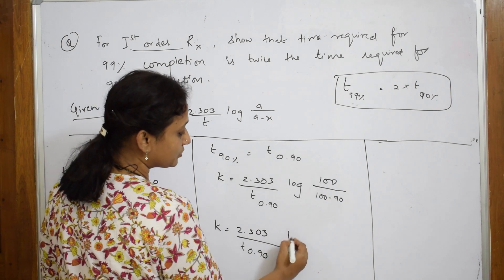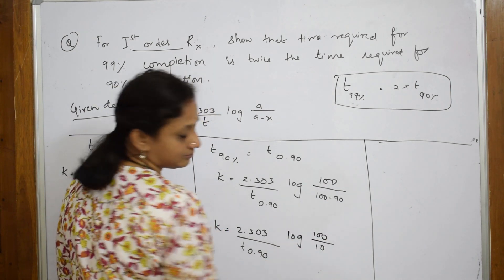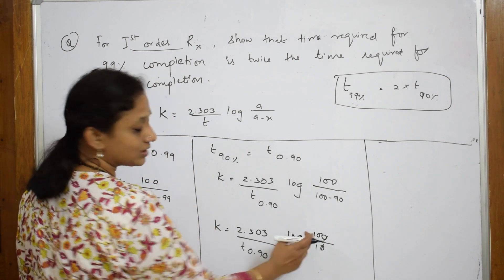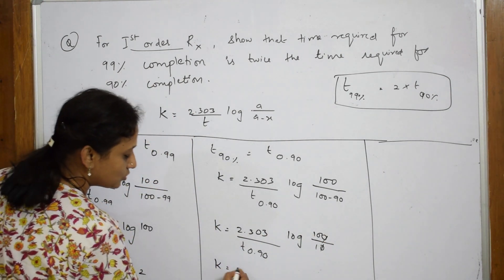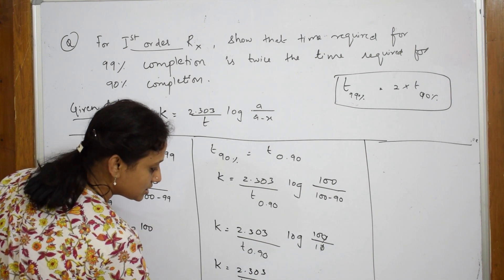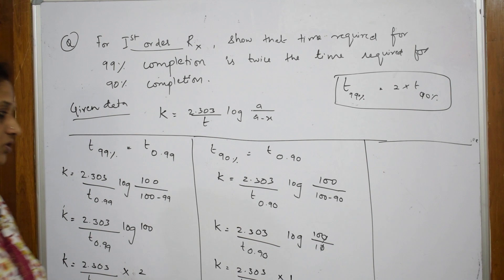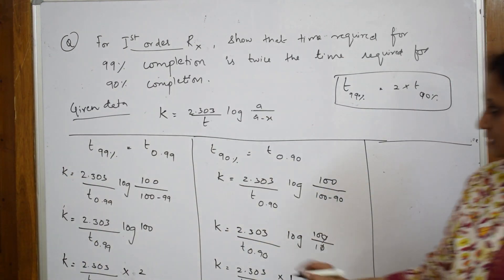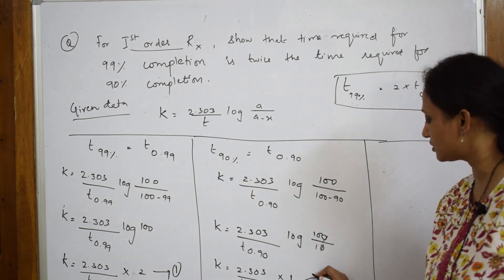So from the first condition: k equals 2.303 by t(0.99), multiplied by 2. From the second condition: k equals 2.303 by t(0.90), multiplied by 1, since log 10 is 1. Label these as equation 1 and equation 2.